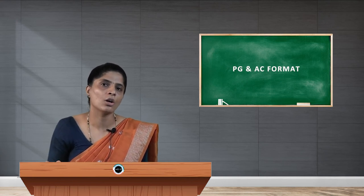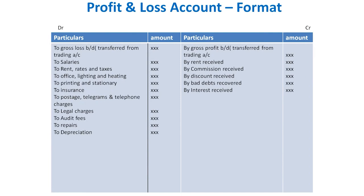After recording the result of the trading account, we enter all indirect expenses on the debit side. The first is salaries — payable to the office staff. Next is rent, rates, and taxes — any rent payable for the building. Other office charges include lighting and heating, printing, stationery, postage, telegrams, and telephone charges — all indirect expenses paid through the office.